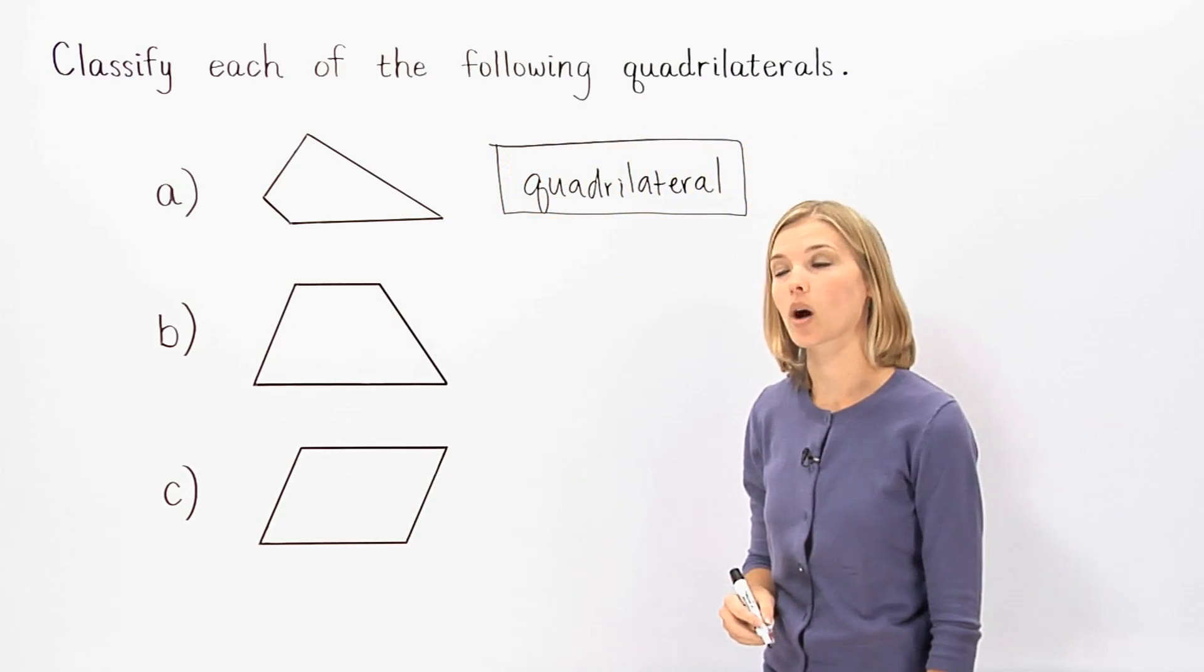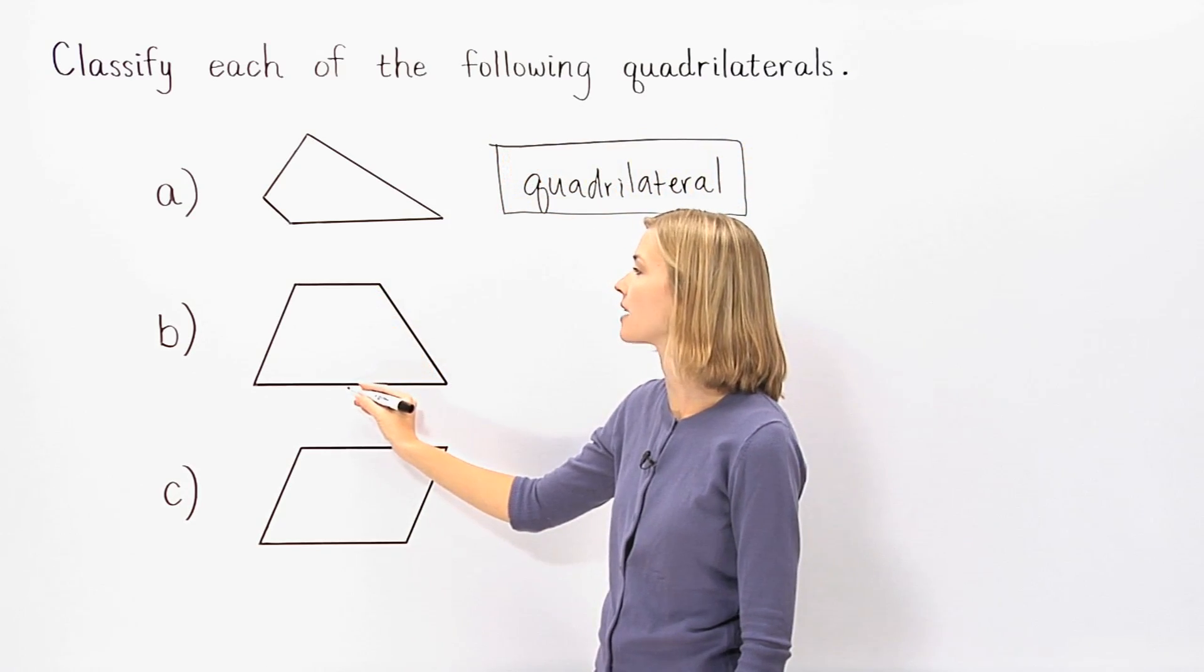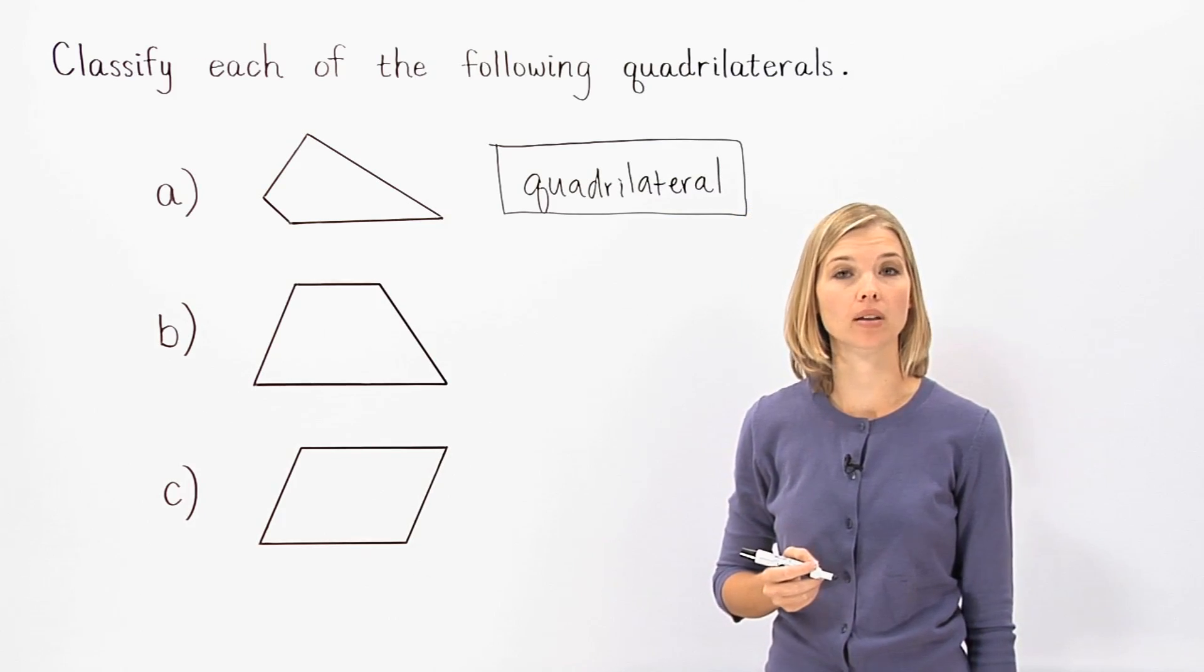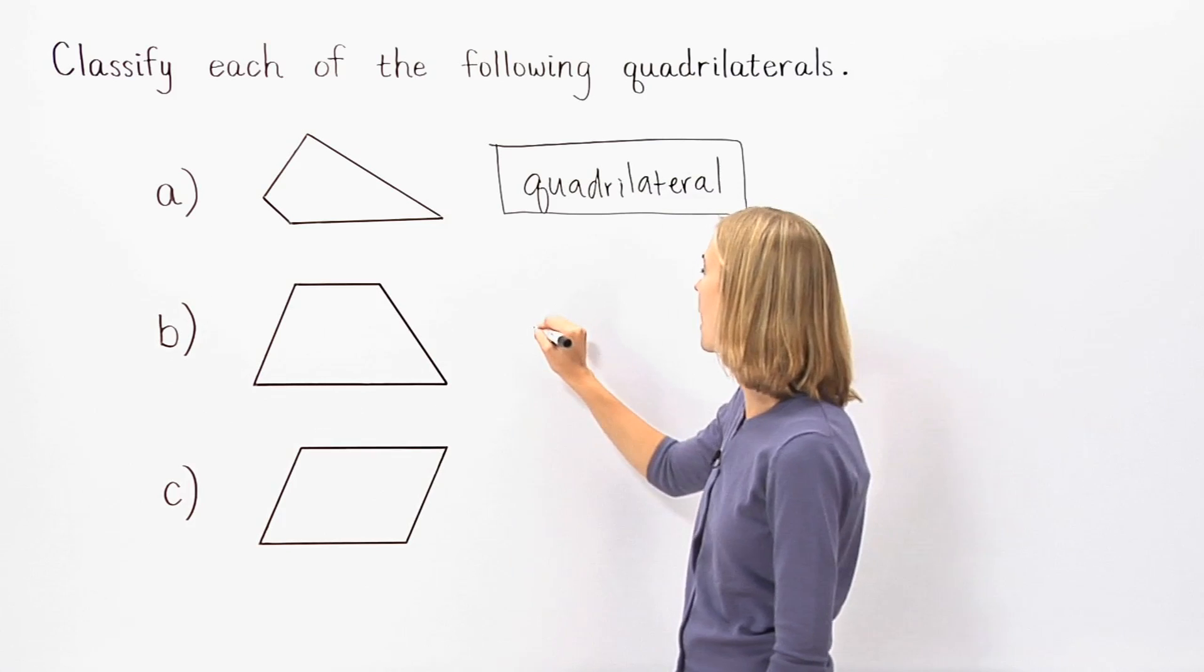The next quadrilateral has one pair of parallel sides. A quadrilateral with exactly one pair of parallel sides is called a trapezoid.